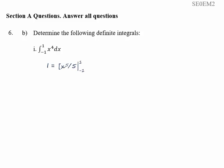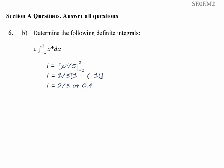I'll take the five outside a bracket and put in the upper value, then subtract the lower value. So x to the five becomes one when x is one, and x to the five becomes minus one when x is minus one. So we've got one-fifth of one minus minus one, which is two over five, or 0.4.